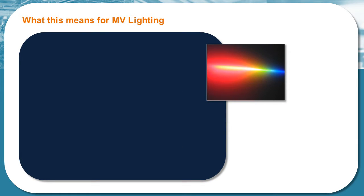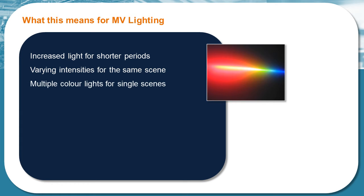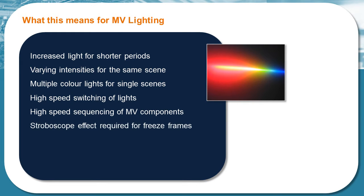As we start to specifically consider machine vision lighting, what are the requirements here as influenced by the types of demands we've discussed so far? Increased light for shorter periods, varying intensities for the same scene, multiple color lights for single scenes, high speed switching of lights, high speed switching of all machine vision components, and stroboscope effect required for freeze frames.